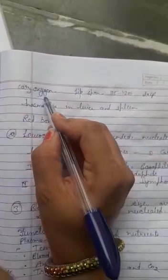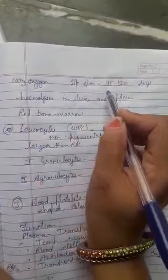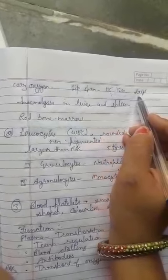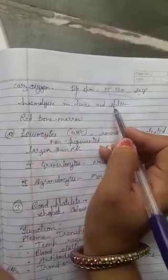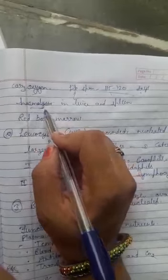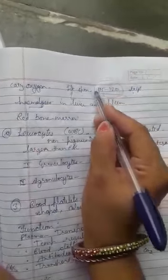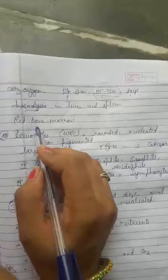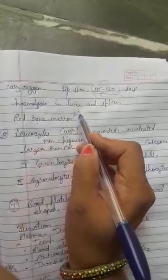Life span is 115 to 120 days. After this, liver or spleen breaks down the RBC through hemolysis. Formation occurs in bone marrow.